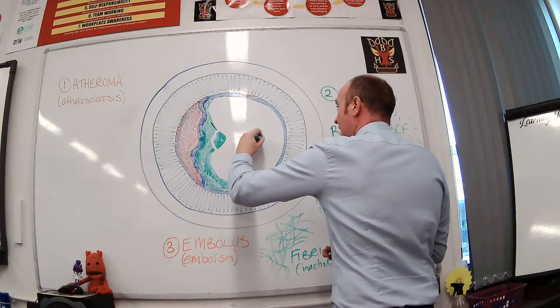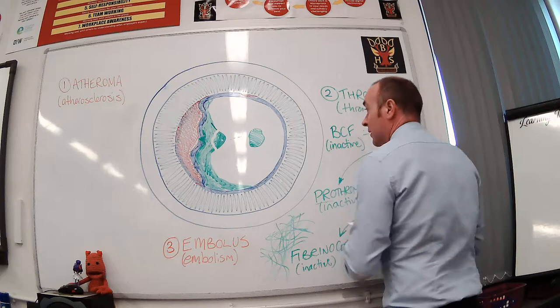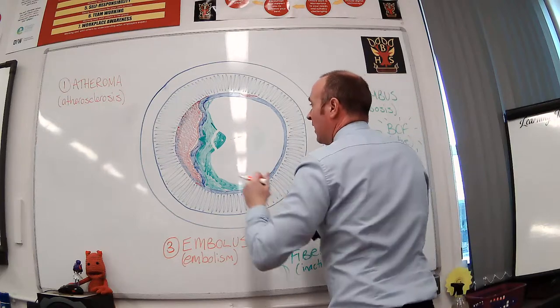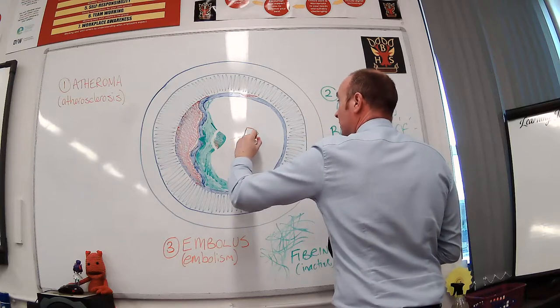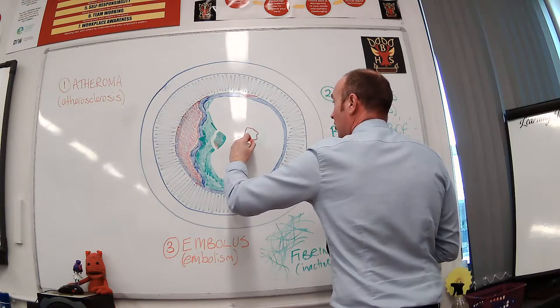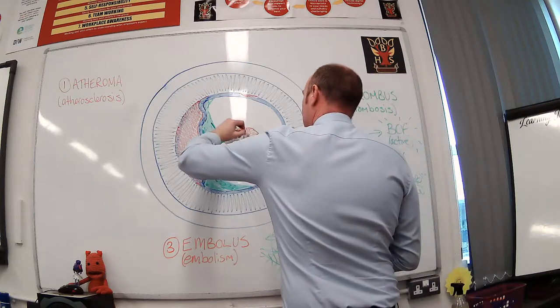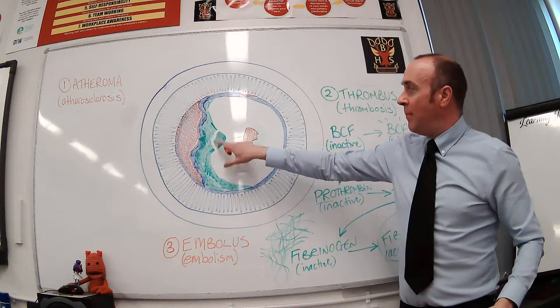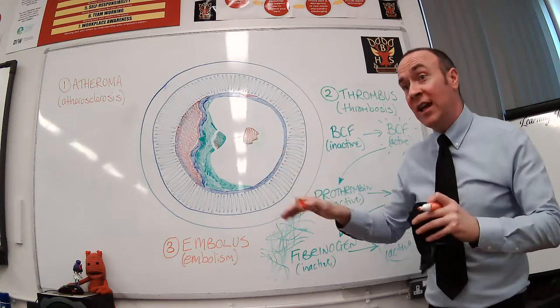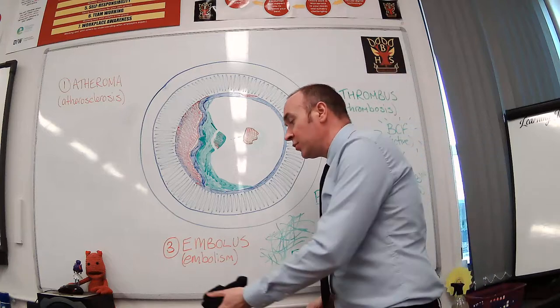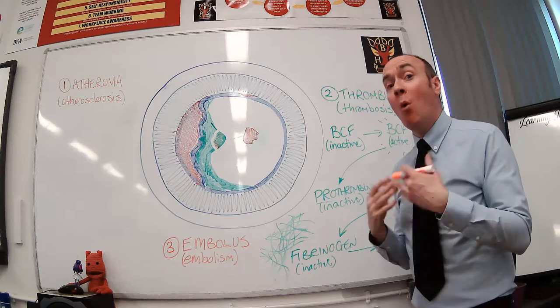When it breaks off, it's no longer considered to be a thrombus. That's a bit of thrombus that's floated away, and that is called an embolus. So that's kind of the third stage. So when a bit of thrombus breaks off, it becomes an embolus. And an embolus, most dangerously, is able to travel through the body. And the problem with an embolus is it can reach somewhere more important. So it can get somewhere like a blood vessel in the brain, which is supplying the brain with oxygen.